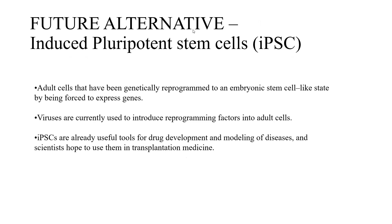Future alternatives: you studied embryonic stem cells and adult stem cells, which we take from the body. For mesenchymal or neurological stem cells, we take from the body, grow in culture media, then infuse. There is something called induced pluripotent stem cells — adult stem cells that have been genetically programmed to an embryonic stem cell-like state. Here they use some viruses to introduce reprogramming factors as a vehicle. These are already useful for drug development and disease modeling.